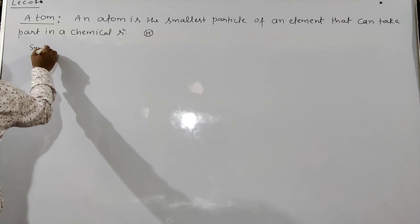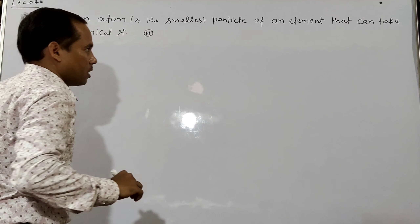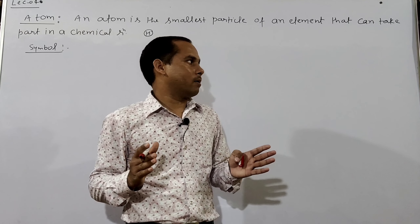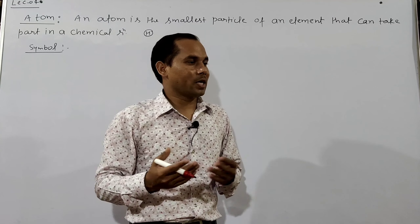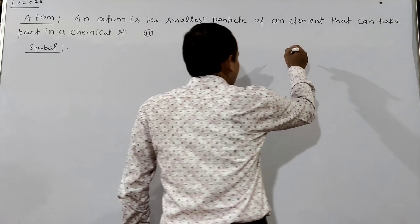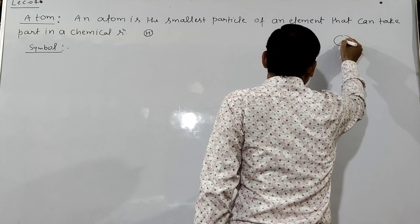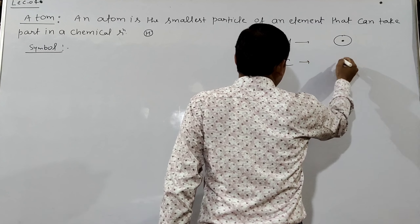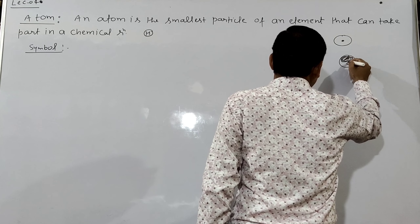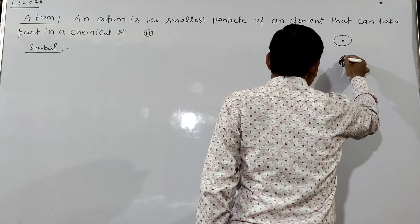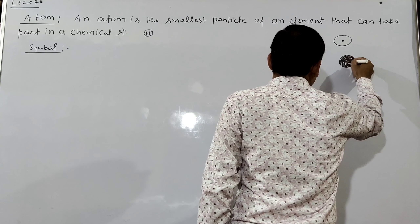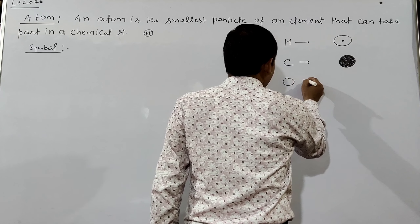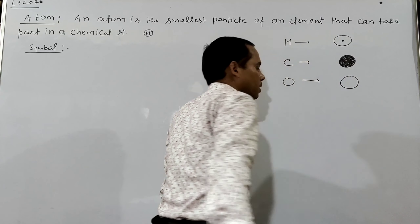Talking about atomic symbols — the first scientist to give symbols for atoms was John Dalton. Dalton gave symbols such as: for hydrogen, draw a circle with a dot in the center; for carbon, draw a completely filled (black) circle, like a sphere. And for oxygen, just draw a plain circle — that was oxygen's symbol.